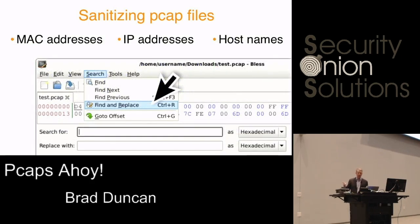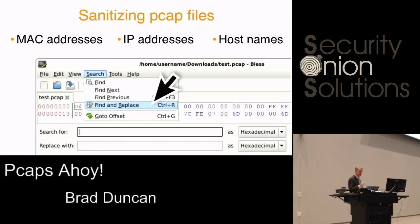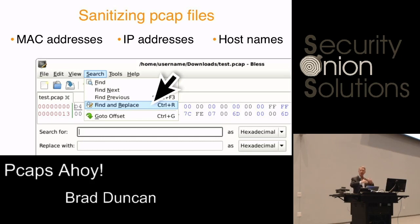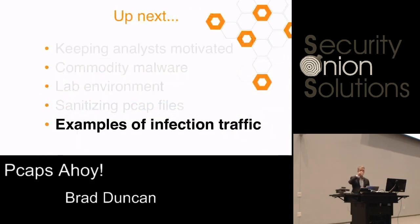What am I changing in the PCAPs? I'm using hexadecimal search and replace for MAC addresses and IP addresses, and text search and replace for host names. It's interesting that in NetBIOS name service (NBNS) traffic, host names don't correspond to any normal hexadecimal pattern breakout, so you've got to use some tricks to actually replace those host names.